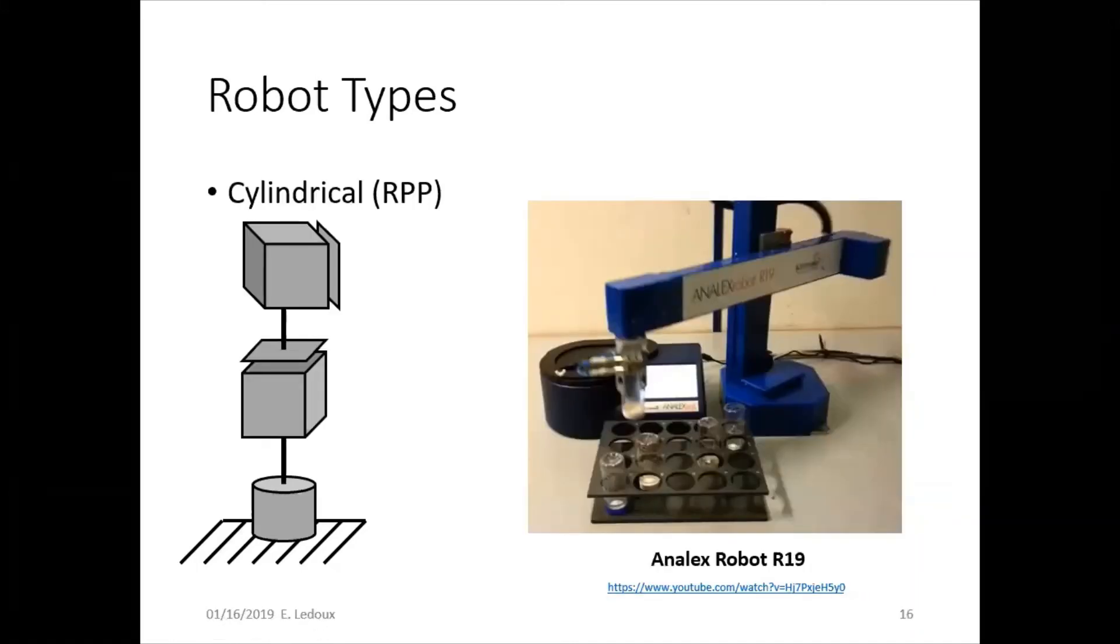Cylindrical robot moves in a cylinder, this is also good for pick and place, but you can see this one is different because it's RPP, so it has one revolute joint and then two prismatic joints. Click the link to see the video.